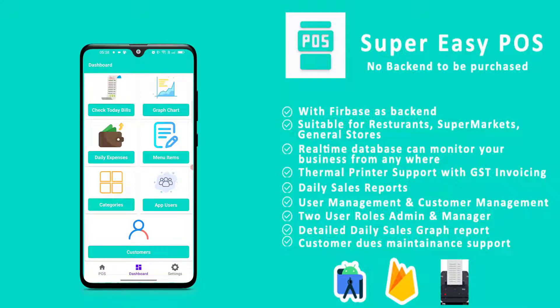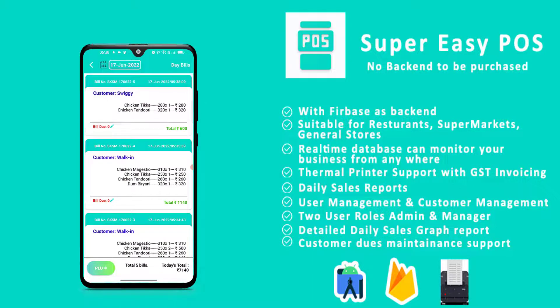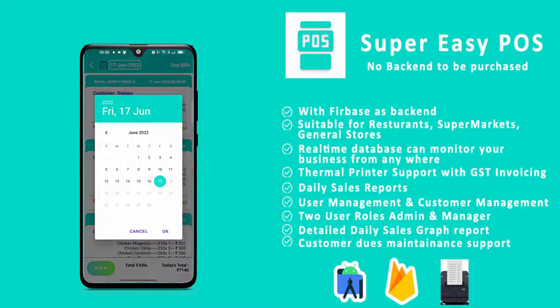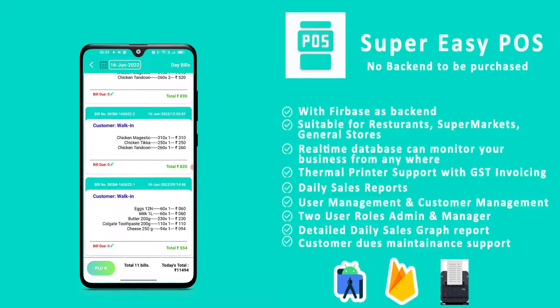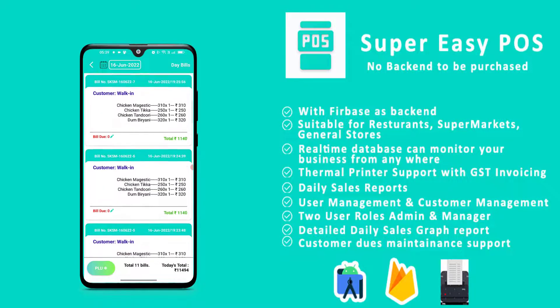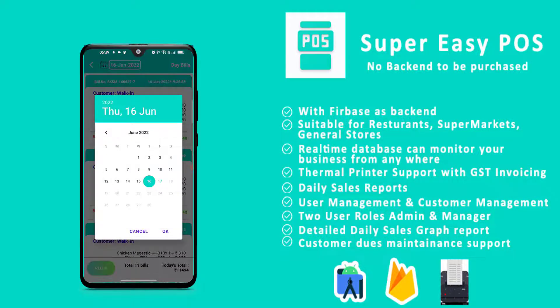Going to the Dashboard, there are five options. The first is 'Check Today's Bills', which shows all invoices created today. At the top you can select a date to filter and retrieve invoices from any specific day.